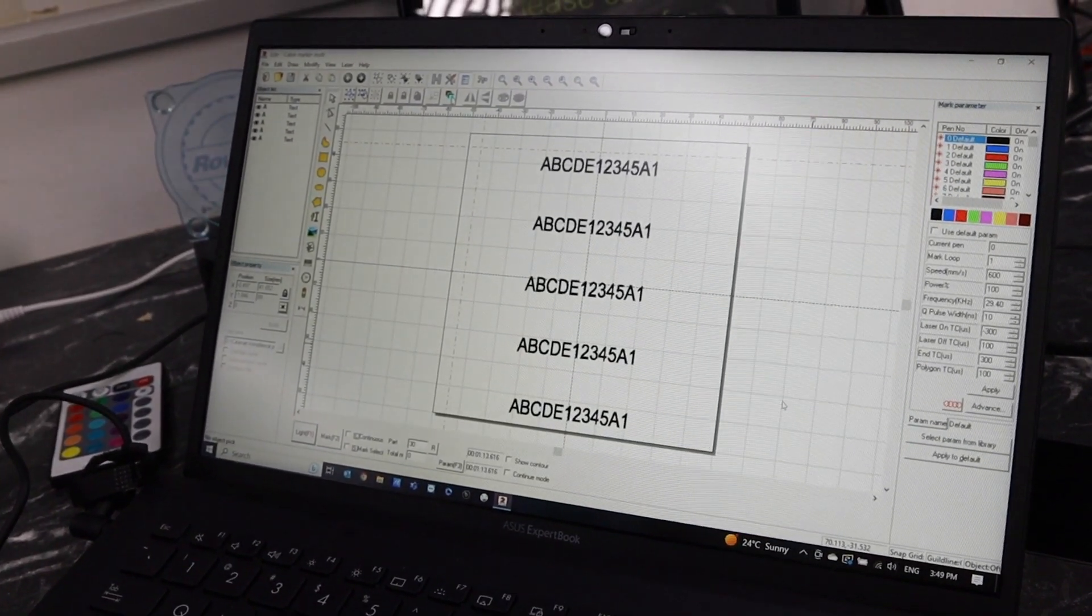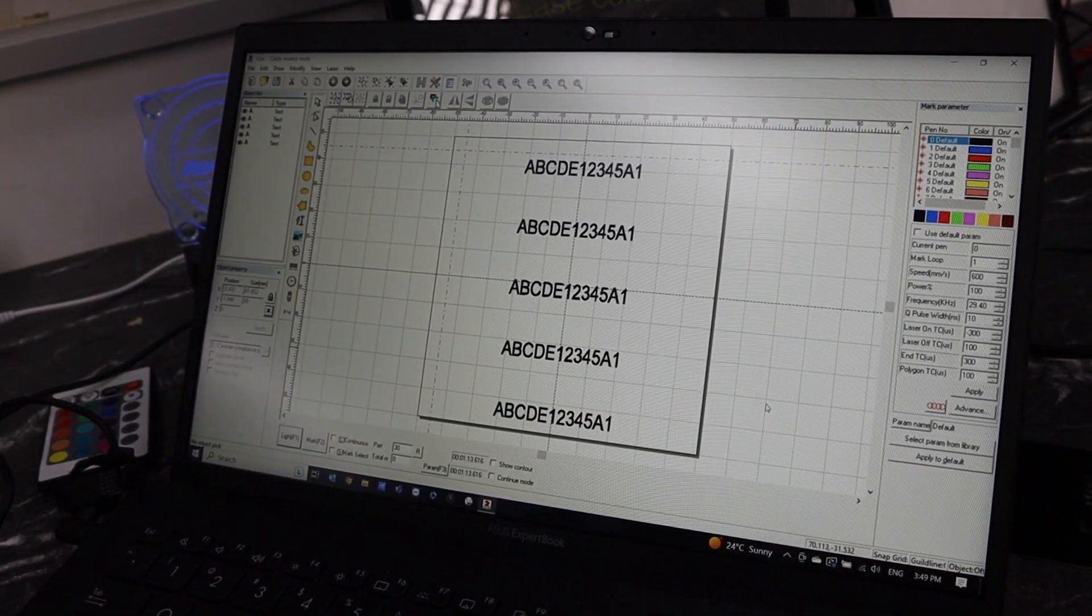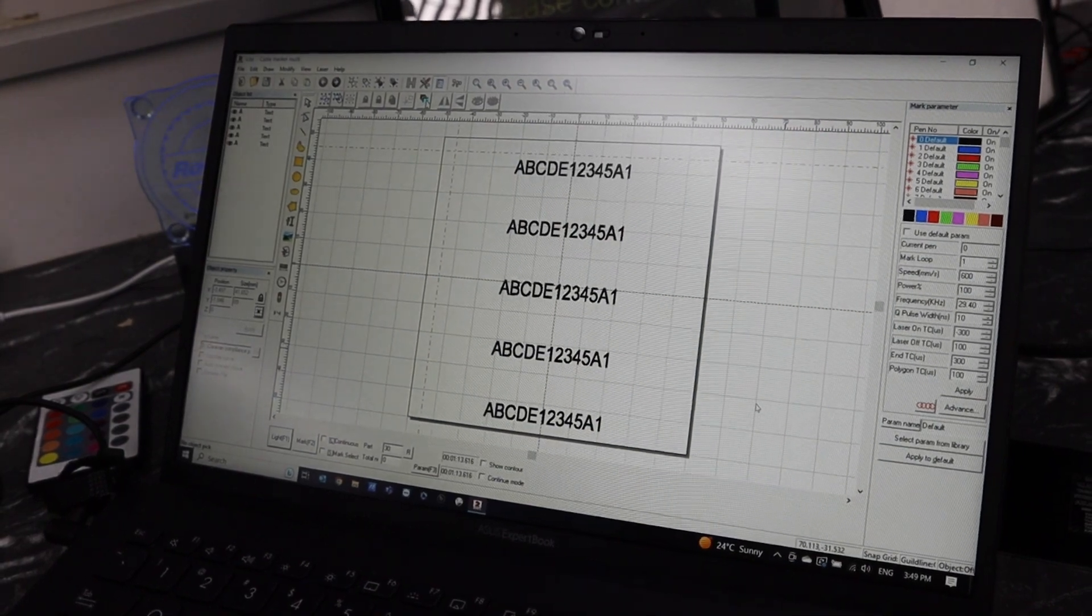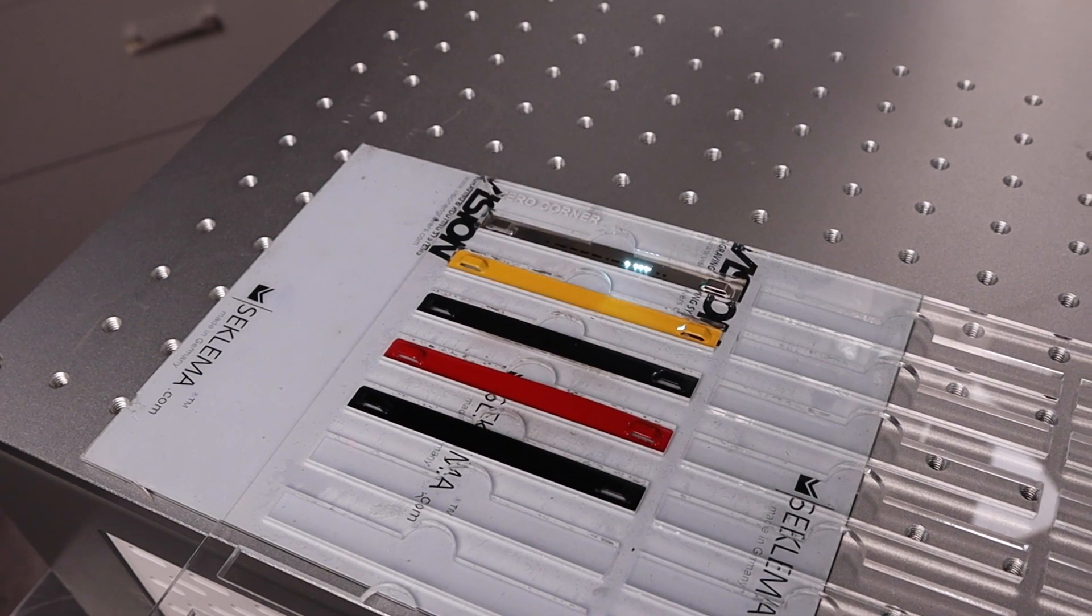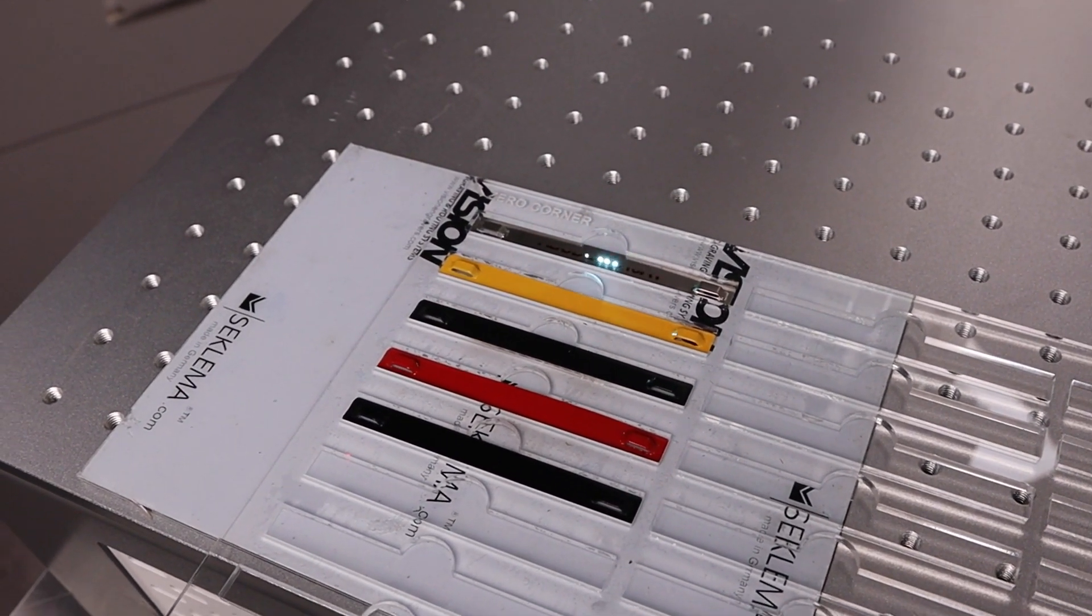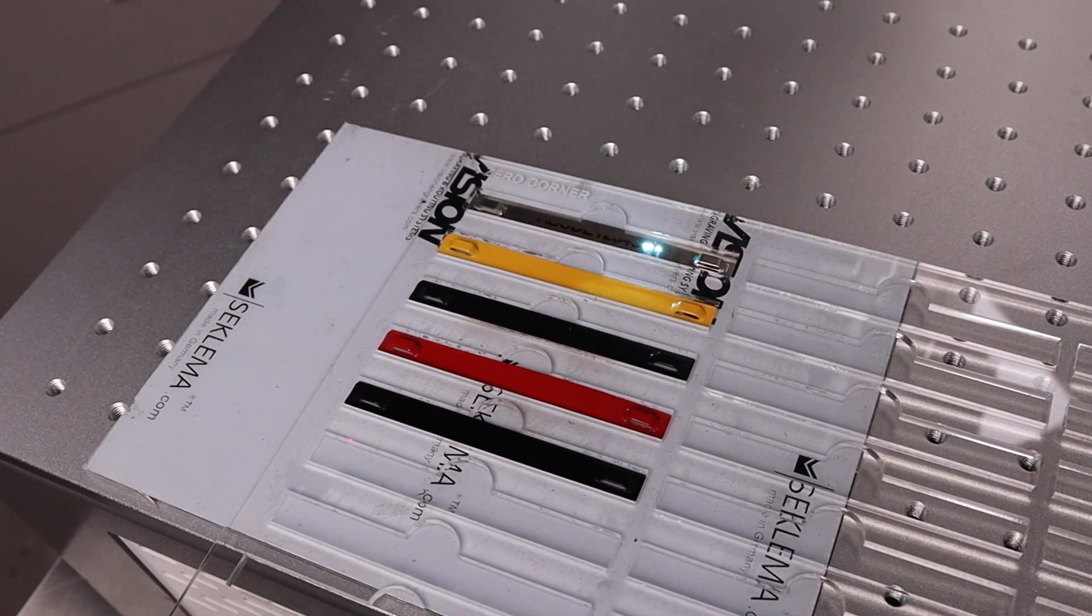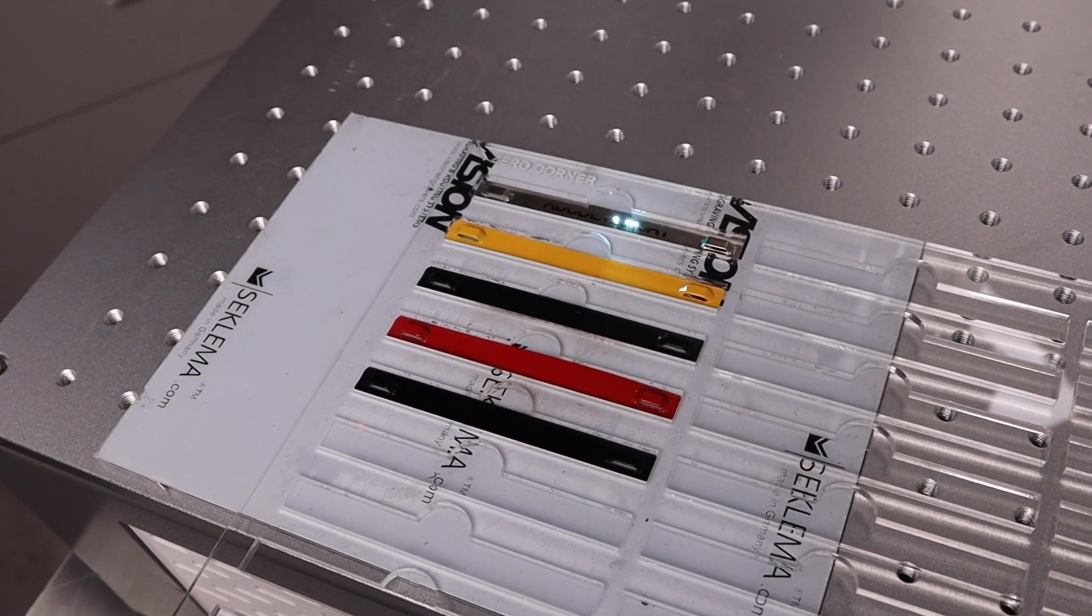I've created an array of the tags so we've got five there that are going to go into our templates. You can see the machine running here now, it's very quick and with the help of our Seclam and Mat which holds down the cable markers as the machine is engraving them.